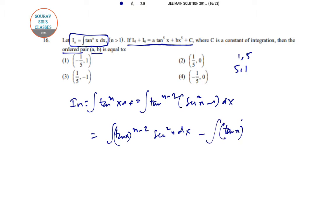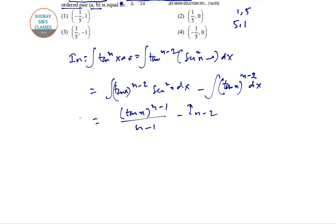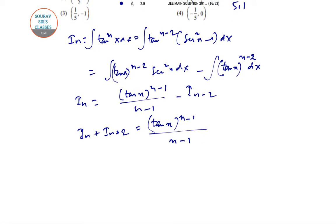This becomes integration of tan to the power n minus 2 times sec squared x dx minus integration of tan to the power n minus 2 dx. Since this is In minus 2, we get In plus In minus 2 equals tan x to the power n minus 1 divided by n minus 1.